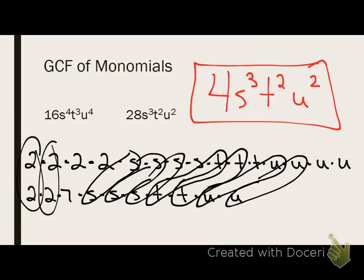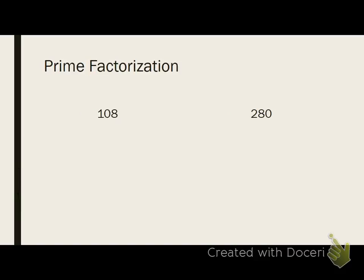All right, now for the shortcut, what you can do for the variable part is you can look at each set of terms. And you choose, so you look at your S's, which term has the smallest value of S's? It's S to the third, so that goes in your GCF. Then look at your T's, which one's the smallest? T squared, so that one goes in your GCF. Look at your U's, which one's the smallest? U squared, so that one goes in your GCF. Okay, so you can choose the smallest exponent value of the two variables. That one goes in GCF. The opposite is true for LCM.